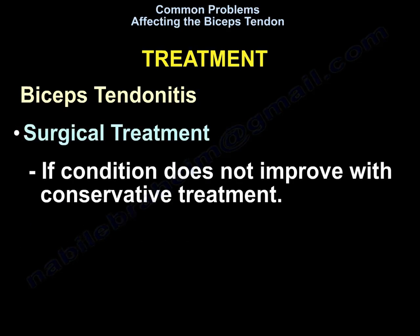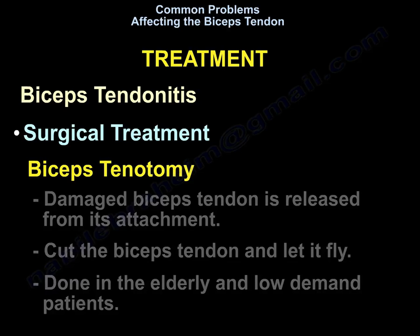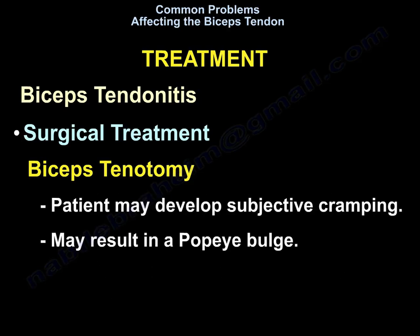Surgical treatment is done if the condition doesn't improve with conservative treatment. What are the surgical treatment options available? Biceps tenotomy — the damaged biceps tendon is released from its attachment; the tendon is cut and let go. It is done in the elderly and in low-demand patients. The patient may have subjective cramping and it may result in a Popeye bulge.